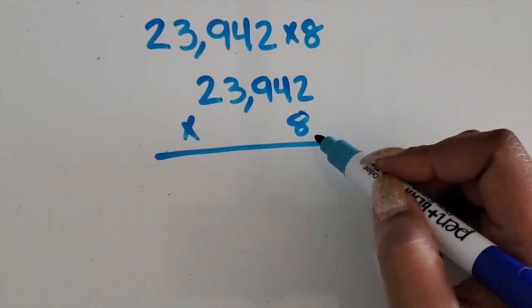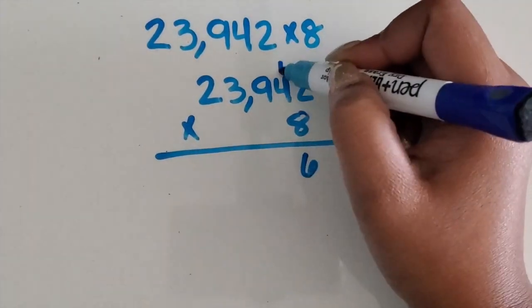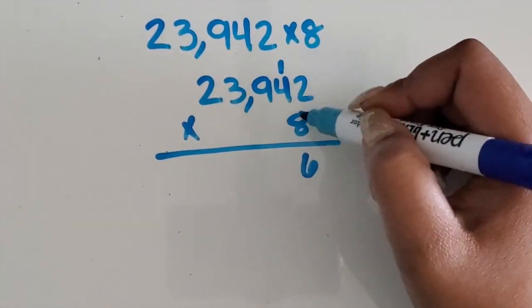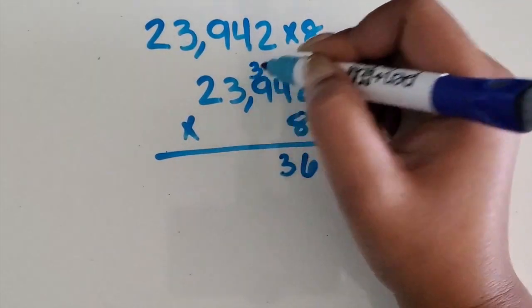We're going to start in the ones place for this example. 8 times 2 is 16, regroup that one. 8 times 4 is 32 plus 1 is 33, regroup the next three.